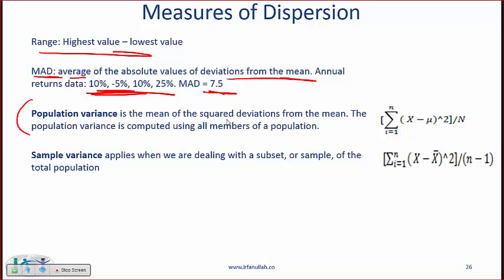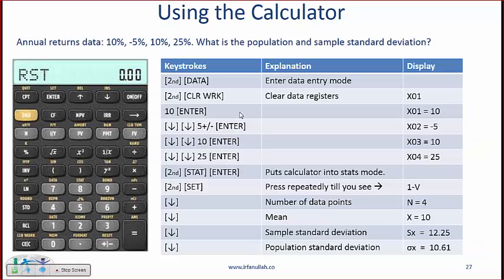Population variance is the mean of the square deviations from the mean and this is the formula for a population variance, but I want you to use the calculator and I'll show you how to do this on a calculator. Sample variance is the same formula but we divide by n minus 1, and this is using the calculator to come up with the variance.